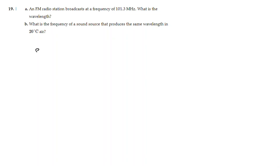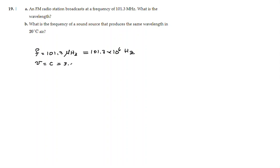We know that the frequency of the wave is 101.3 MHz. Remember that 1 MHz is equal to 10 to the 6 Hz, so this is 101.3 times 10 to the 6 Hz. It is good to remember this conversion because we are going to need it later. This radio wave is an electromagnetic wave, so we know the speed — the speed of the wave will be the speed of light, which is approximately 3.0 times 10 to the 8 meters per second.